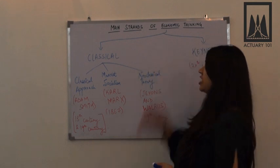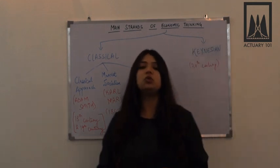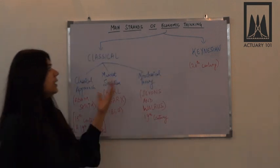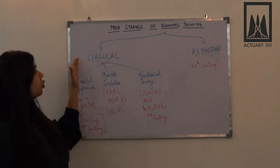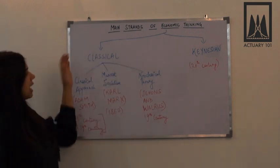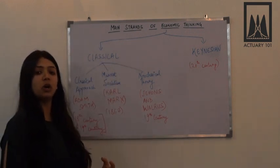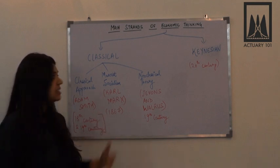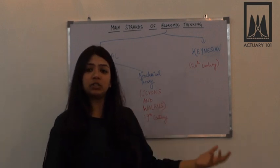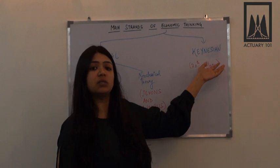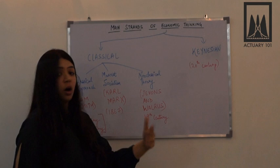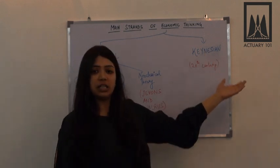Today we are going to be doing the main strands of economic thinking, which is a new topic that has been added to CB2 and was not previously in CT7. Broadly categorizing economic thinking, we can divide it into two parts: the classical theories and the Keynesian school of thoughts. The classical theory mainly focuses on microeconomic concepts like demand, supply and equilibrium price, whereas the Keynesian school of thoughts focuses mainly on unemployment and national income — the macroeconomic point of view.